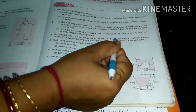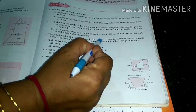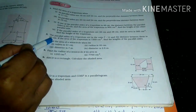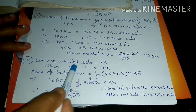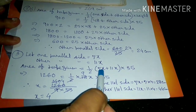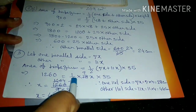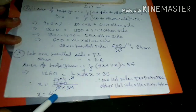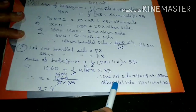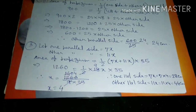Question number three: the parallel sides of the trapezium are in the ratio 7:11. The distance between them (height) is 35, and the area is 1260 cm². Find the length of the parallel sides. Let one parallel side be 7x and the other be 11x. Using the formula: area = half into (7x + 11x) into 35 = half into 18x into 35. Solving, x = 4. So one parallel side is 7×4 = 28 cm, and the other is 11×4 = 44 cm.